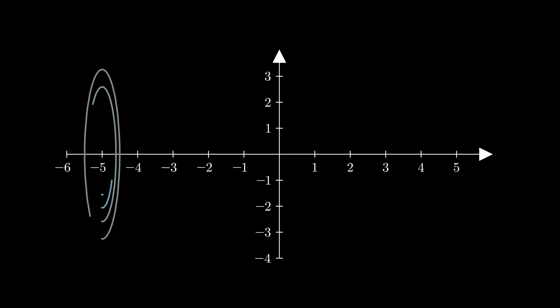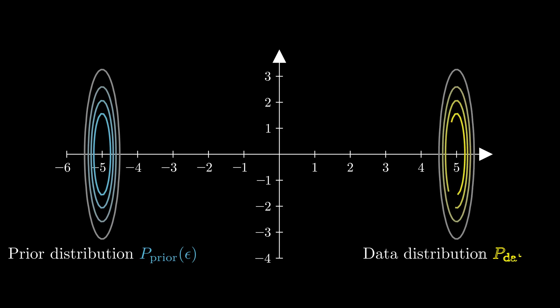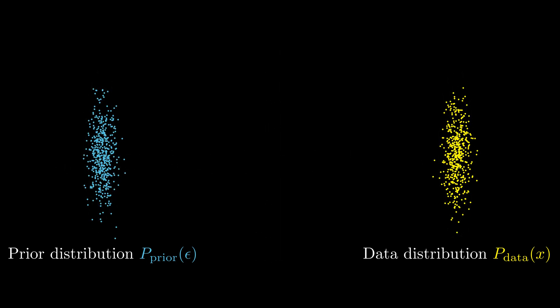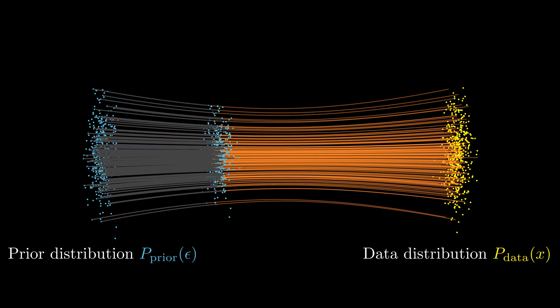Let's use a simple example to illustrate how flow matching works. Here we have a prior distribution and a data distribution. This data distribution can be very complex. We only have data samples.